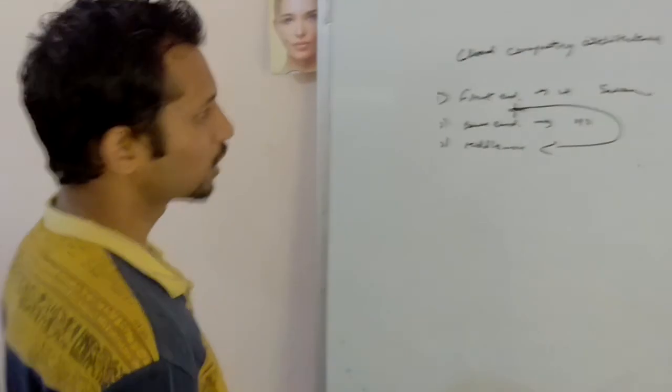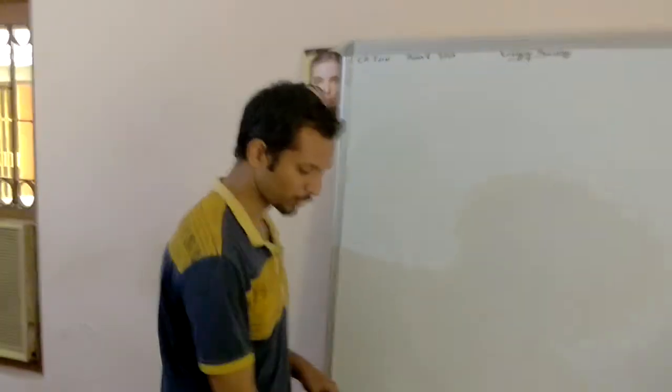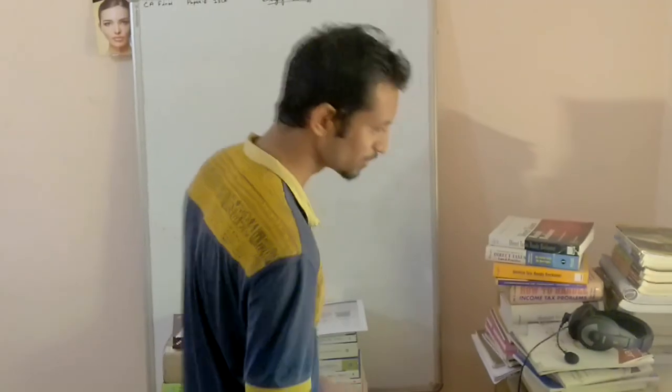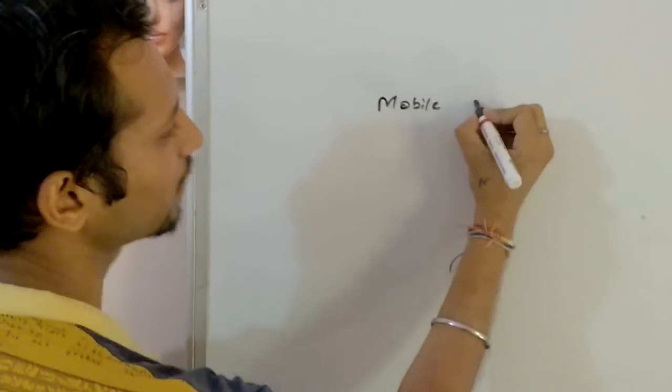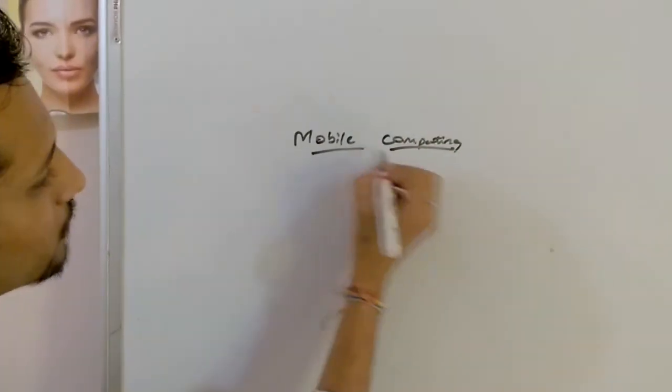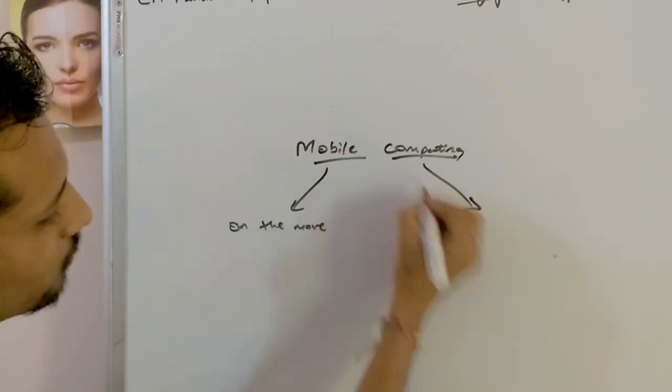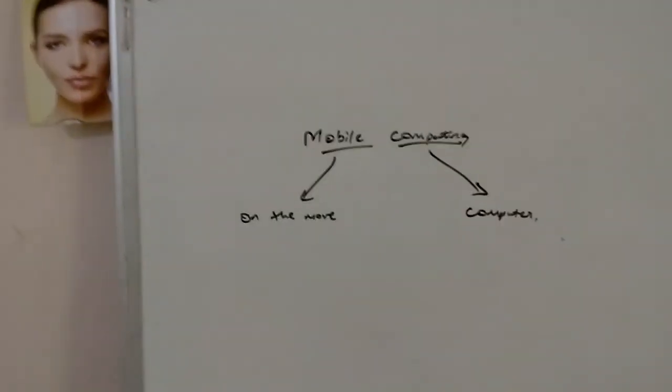So that's totally cloud computing. Then our next topic is mobile computing. Mobile computing. What is mobile computing? This laptop, is laptop mobile computing? Is this mobile computing? Mobile computing is made of two words, two terms. One is mobile, second is computing. What does this mean? Mobile means on the move. On the move. Computing means computer.